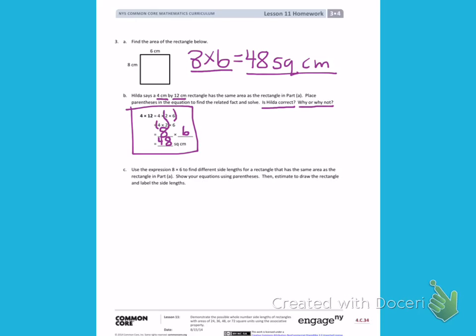Letter C. Use the expression 8 times 6 to find different side lengths for a rectangle that has the same area as the rectangle in Part A. Show your equations using parentheses. Then estimate to draw the rectangle and label the side lengths.